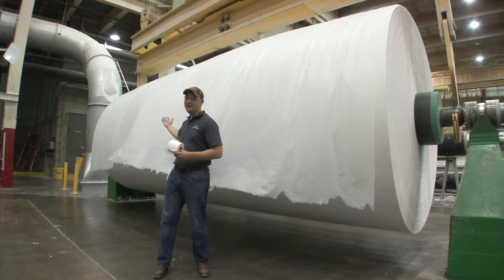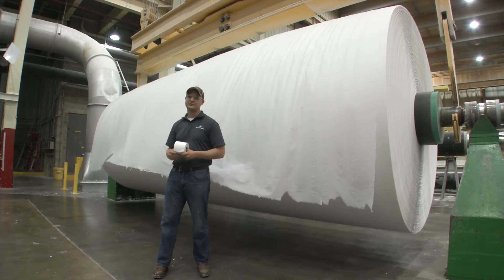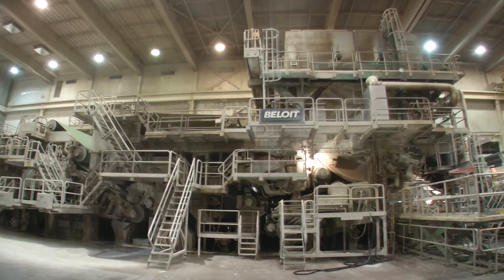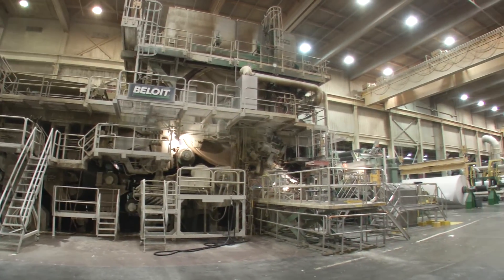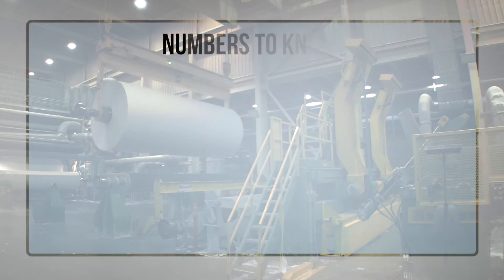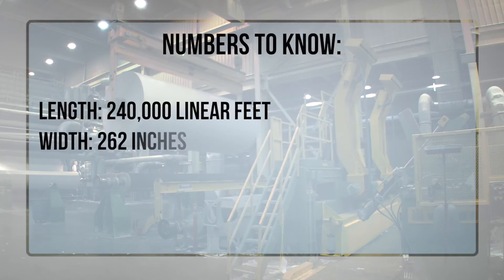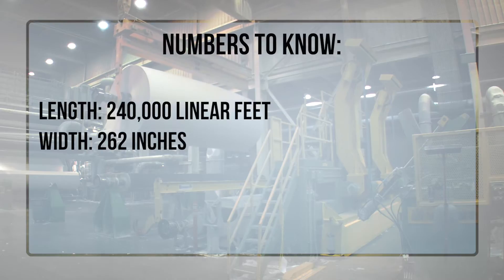This paper machine produces tissue at a rate of 5,000 feet per minute. In less than an hour, it produces a huge parent roll of paper that weighs over seven and a half tons. This machine can produce 30 parent rolls each day. The width is 262 inches and contains 240,000 linear feet of paper.